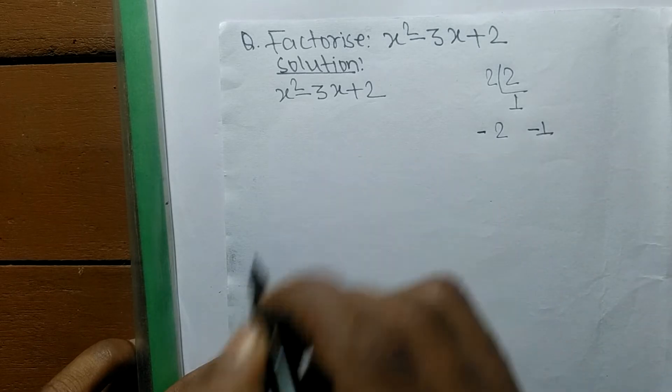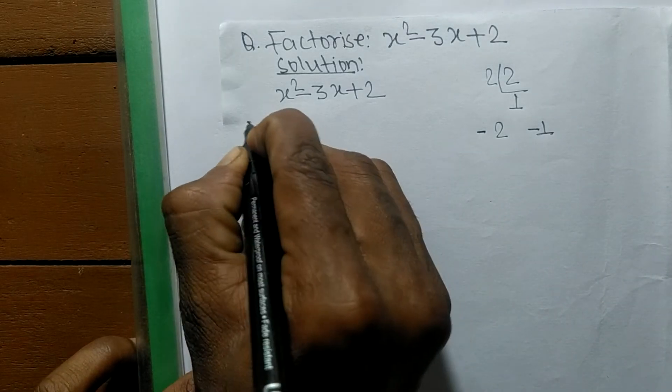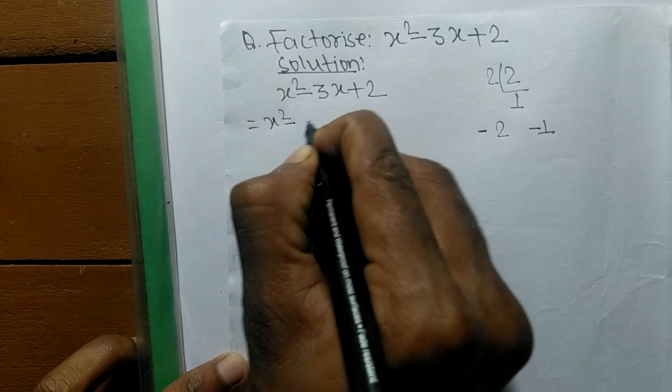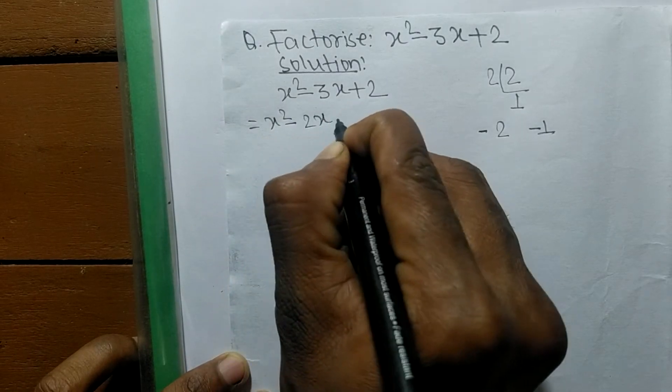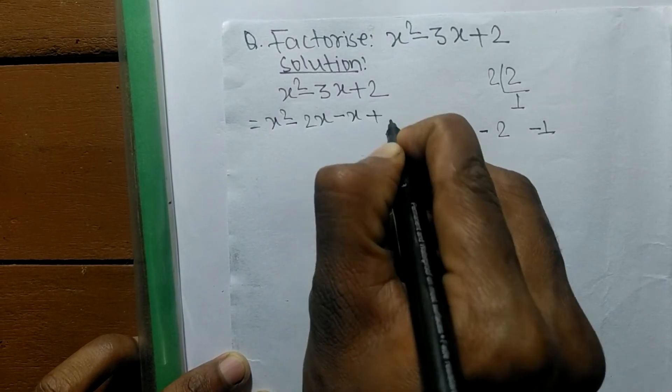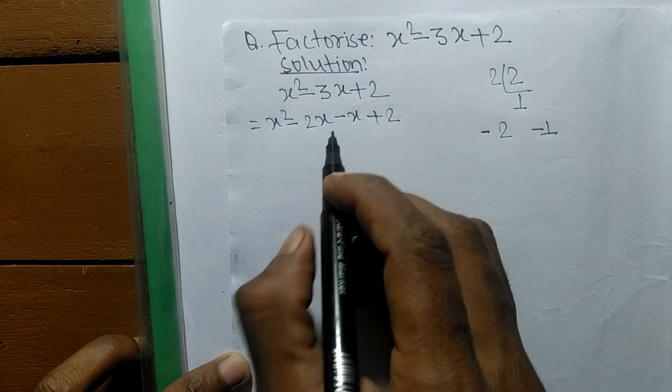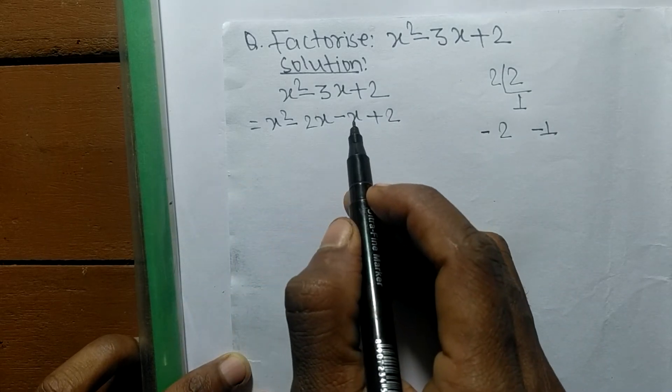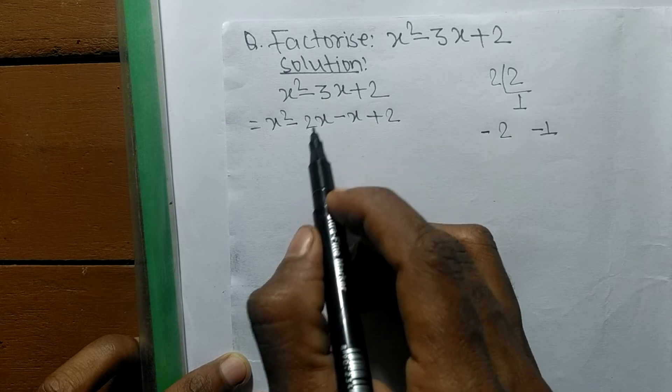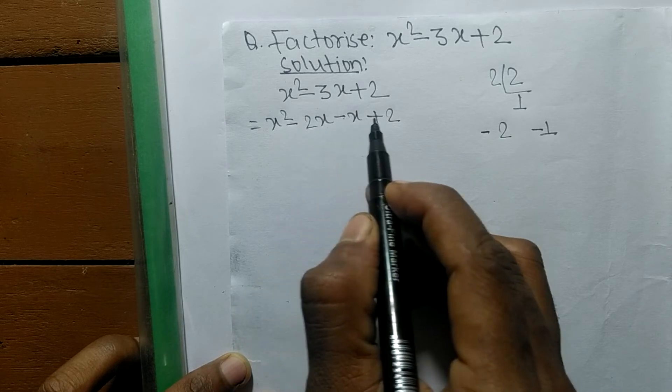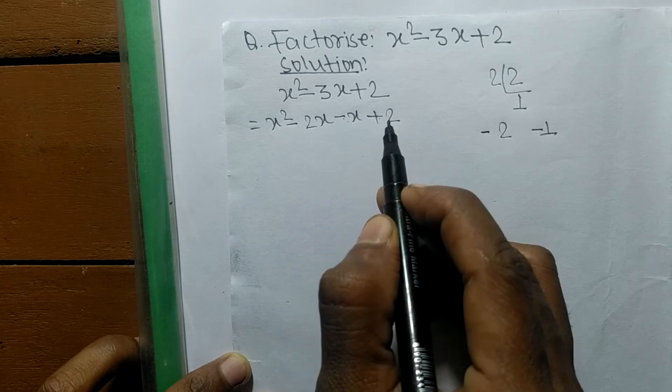So we can write it x squared minus 2x minus x plus 2. So minus 2x minus x means it is minus 3x, and minus times minus plus 2 into 1 means it is 2.